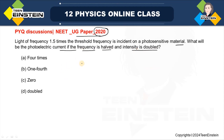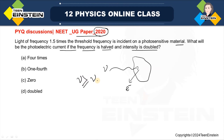We know that when light of frequency ν is incident on a photosensitive material, photoelectrons come out and we get photoelectric current only if the frequency of the incident photon is greater than or equal to a certain frequency called the threshold frequency. In this case, the incident frequency ν is equal to 1.5 times the threshold frequency, so photoelectric effect occurs.